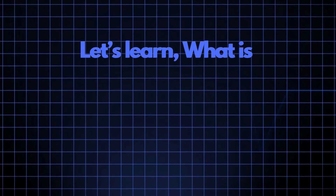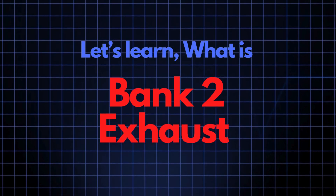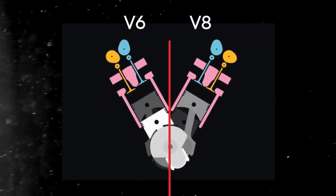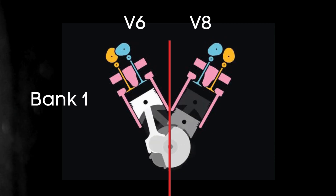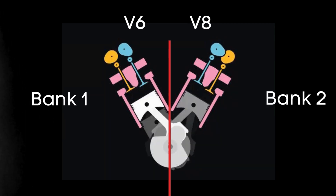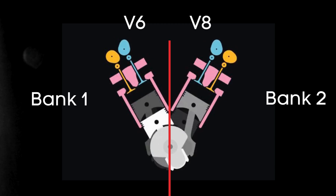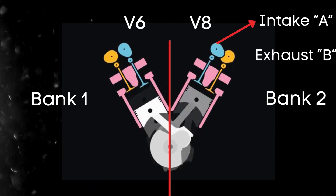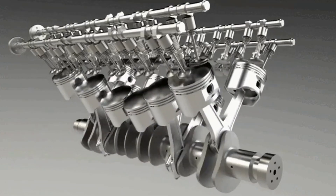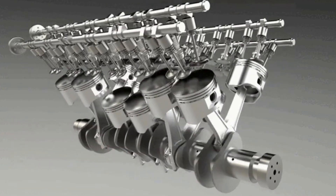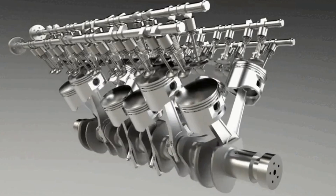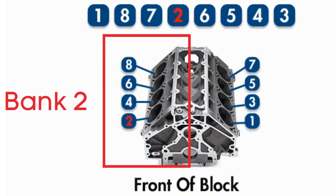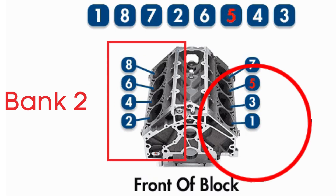Now let's learn what bank 2 exhaust camshaft is. In the case of V6 or V8 engines, there are two camshafts: bank 1 and bank 2. For dual overhead camshaft, DOHC engines, there are two camshafts per bank — intake and exhaust. The exhaust camshaft controls the opening and closing of the exhaust valves. Bank 2 typically refers to the opposite side of the engine where cylinder 1 is located.